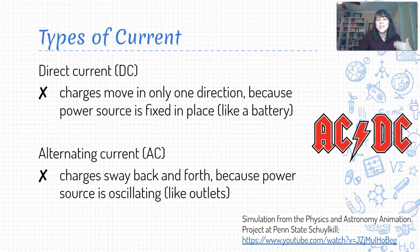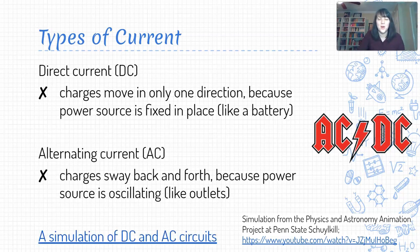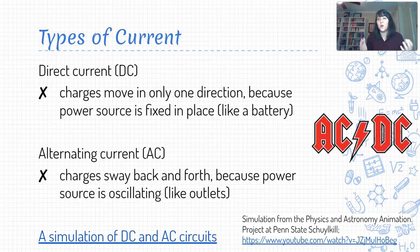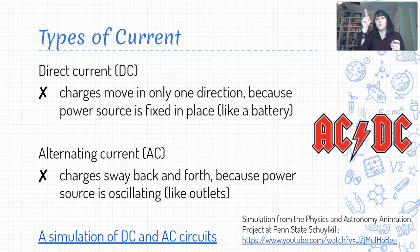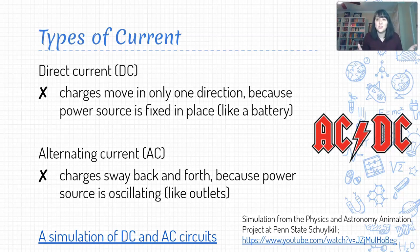Just to illustrate this a little more, I have a short simulation of DC and AC circuits to show you. Notice how in the DC circuit, the direct current has all of our charge particles moving the same way the entire time. In our AC alternating current circuit, we see those charges swaying back and forth.